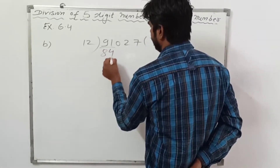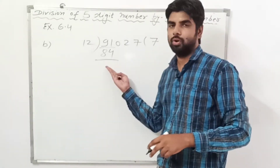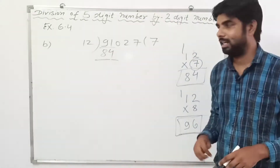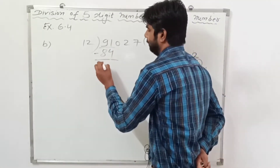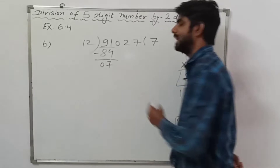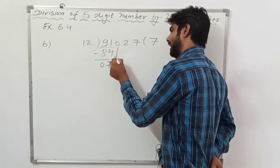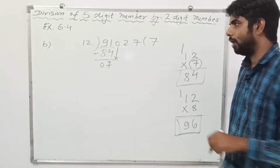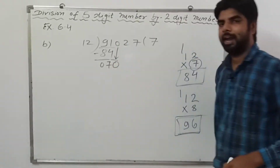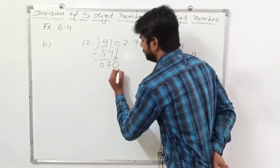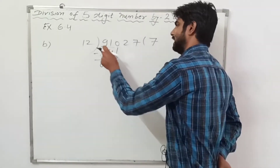Now we subtract 84 from 91, and we get 7. Next, we bring down the 0 and write it to the right of 7, so it becomes 70.